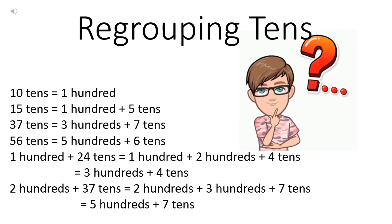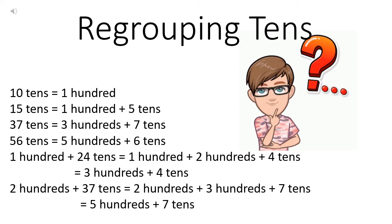Now suppose you have two hundreds plus thirty-seven tens. You already have two hundreds and when you regroup thirty-seven tens, you get three hundreds and seven tens. So let's add them — two hundreds plus three hundreds is equal to five hundreds plus seven tens.